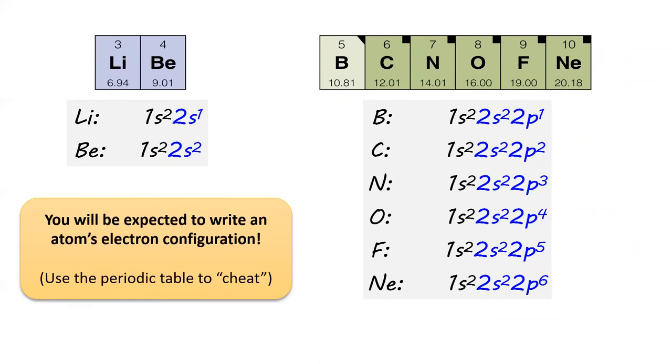Notice that the elements on the left side of the table have their last electron placed in an s orbital, and the elements on the right side have their last electron placed in a p orbital. The noble gases will always have full s and p subshells for their highest energy level.